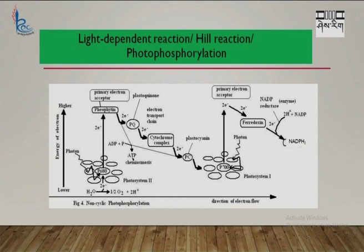The light-dependent reaction — photophosphorylation — comprises non-cyclic photophosphorylation and cyclic photophosphorylation. Non-cyclic photophosphorylation involves both Photosystem II and Photosystem I. The reaction center of Photosystem II is P680, which means that chlorophyll A of Photosystem II absorbs a shorter wavelength of light, which is around 680 nanometers. In non-cyclic photophosphorylation, we start with Photosystem II.